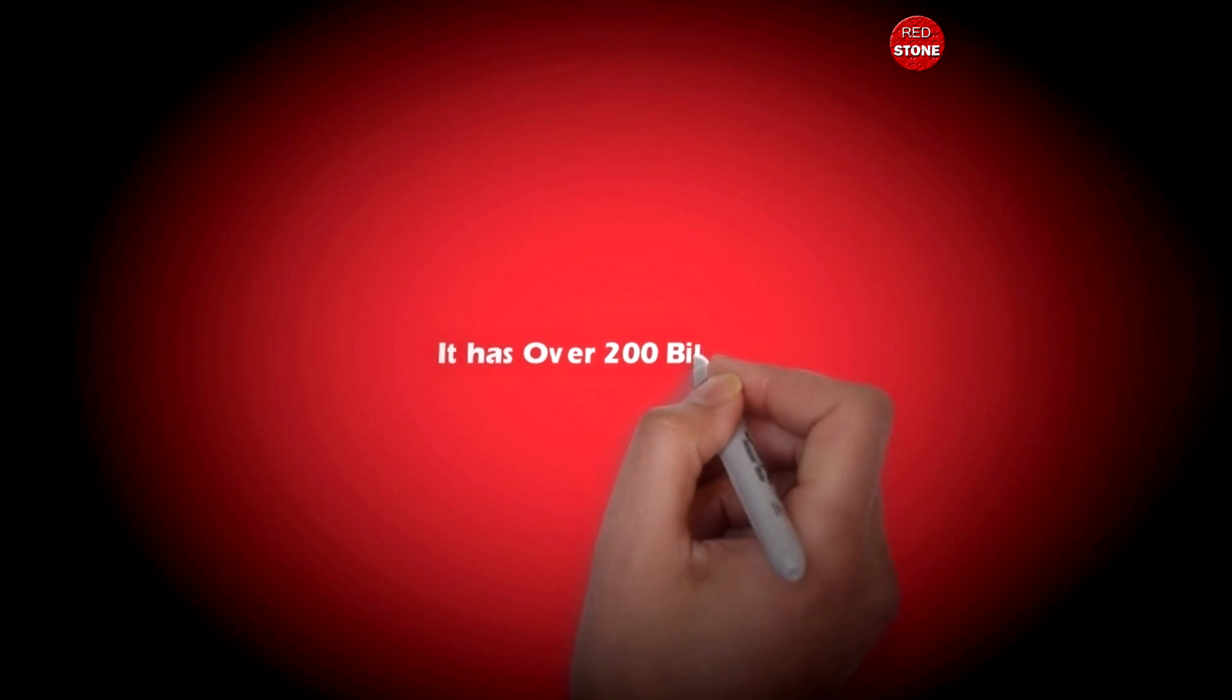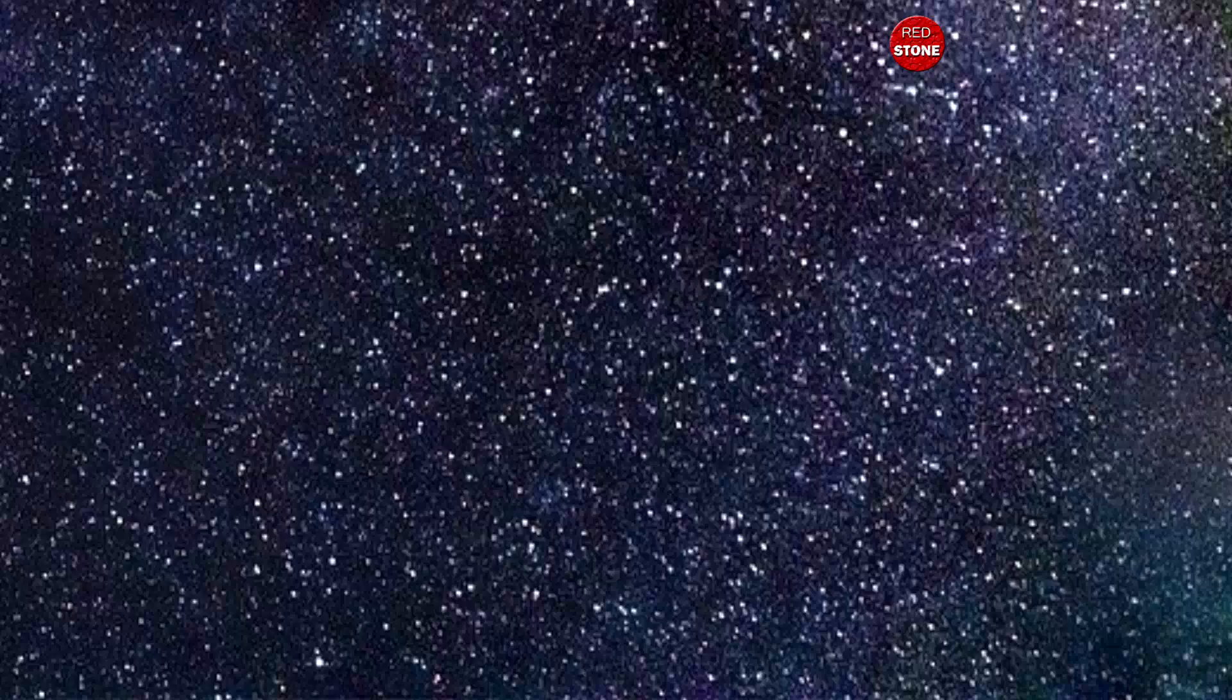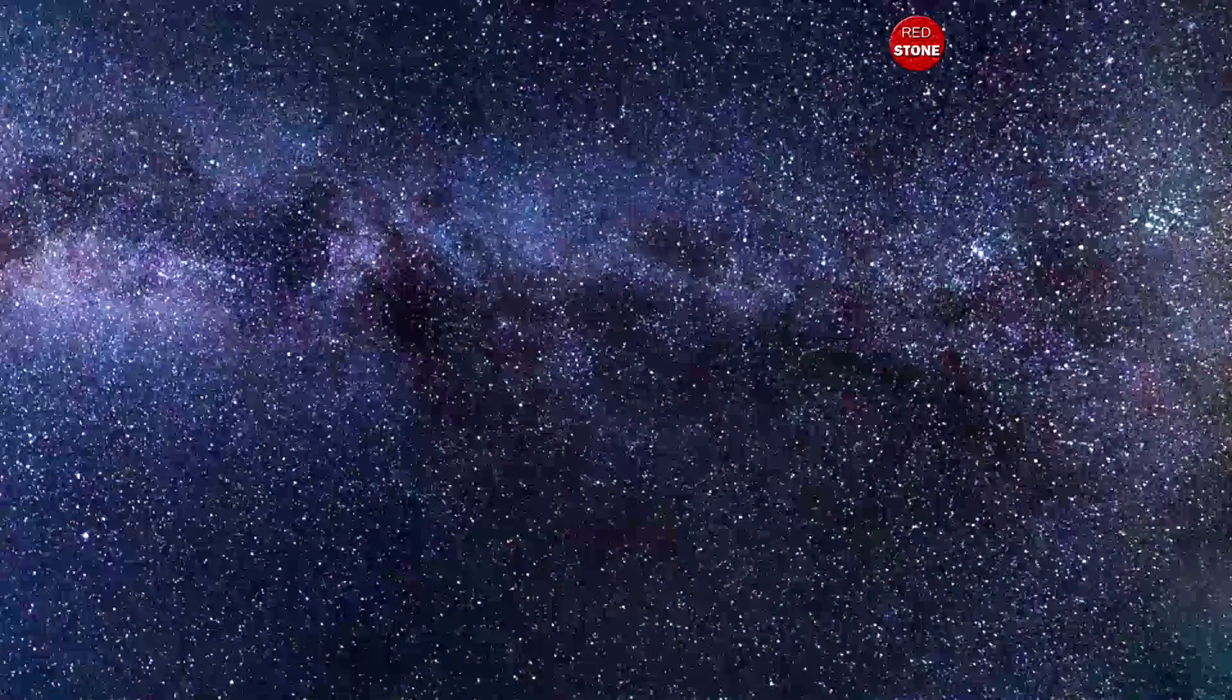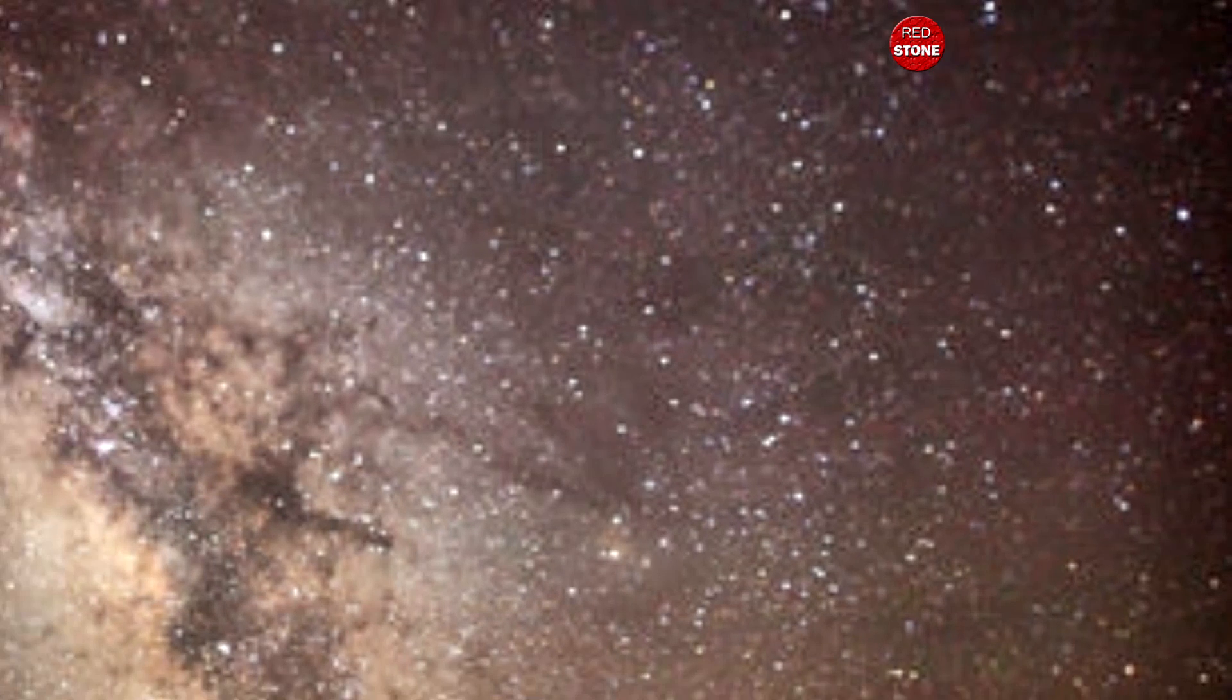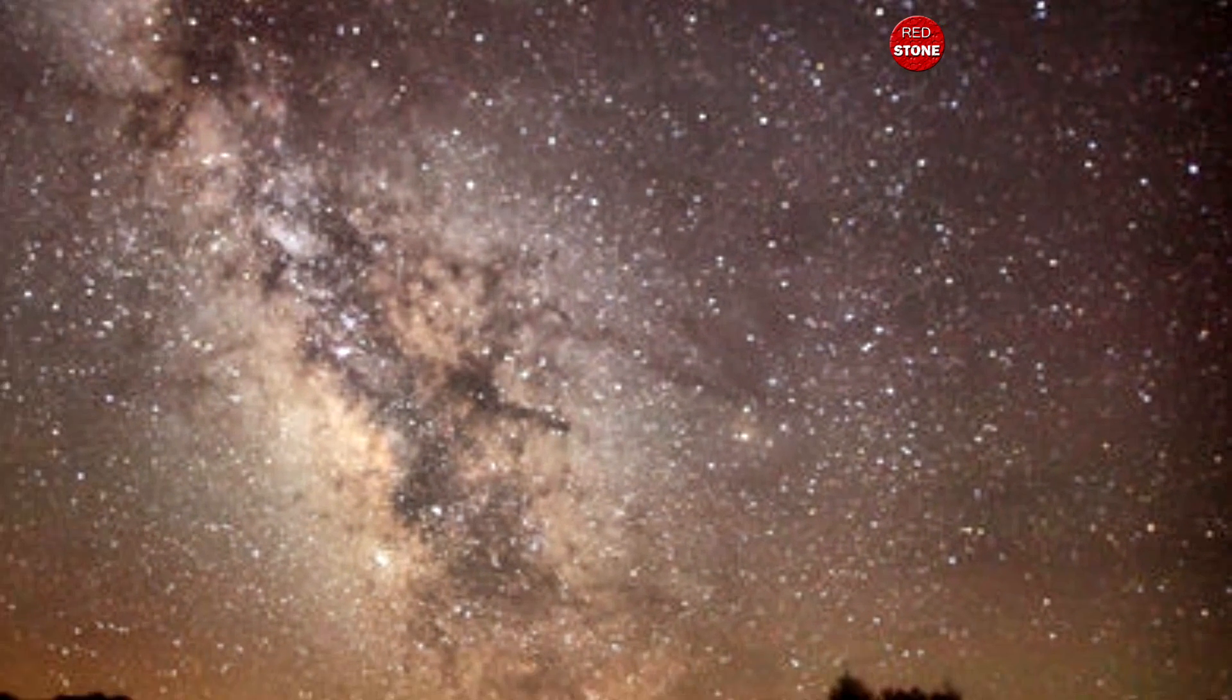7. It has over 200 billion stars. The Milky Way has between 100 to 400 billion stars, but when you look up into the night sky, the most you can see from any one point on the globe is about 2500.